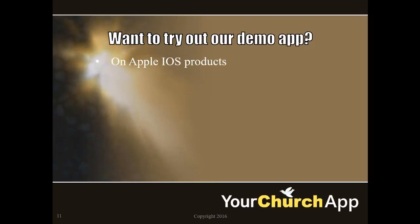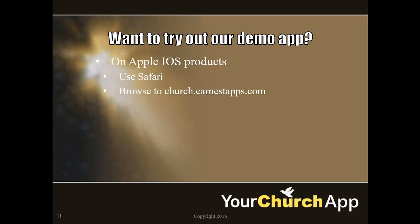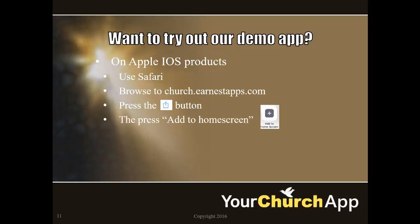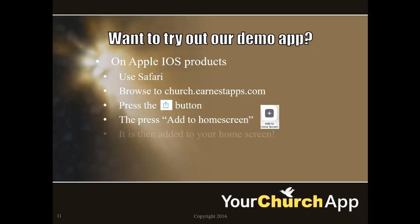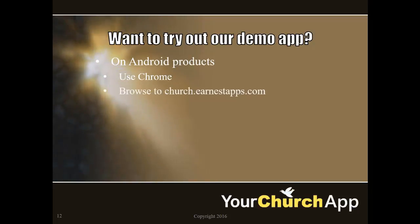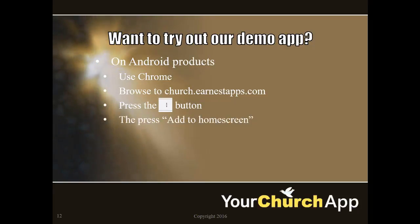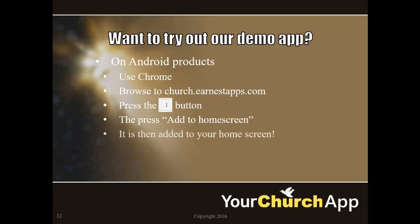Want to try out our demo app? It's simple. If you're using any Apple iOS product such as the iPhone, use Safari and browse to church.earnestapps.com. Once it loads, press the up arrow button to bring up the extra menu, select 'Add to Home Screen,' and click Add — it's then added to your home screen. For Android, use Chrome, browse to church.earnestapps.com, press the three dots in the upper right corner, choose 'Add to Home Screen,' press Add, and it's done.